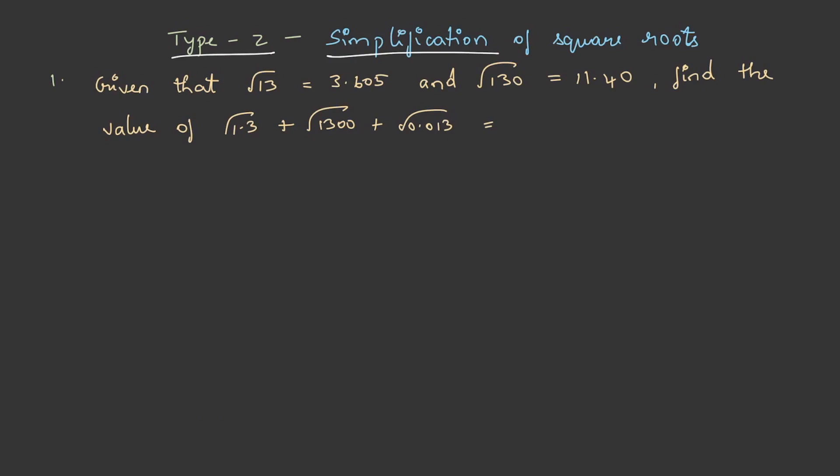In the question, it is given that √13 = 3.605 and √130 = 11.40. These are approximate values. Find the value of √1.3 + √1300 + √0.013.